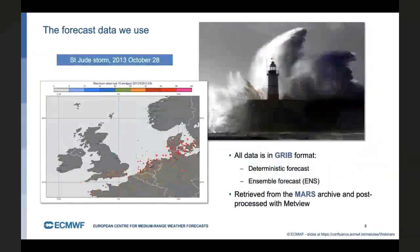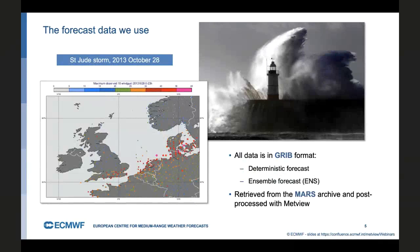The forecast data that we will work with in the webinar is related to the St. Jude storm from 2013. This plot shows you the wind gust observations and the red dots really indicate the actual storm track. All the data are in GRIB format. We have a deterministic forecast and ensemble forecast taken from the ENS system. Everything was retrieved from the MARS archive and was processed with Metview.